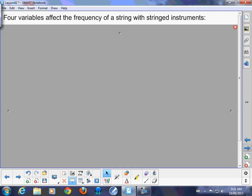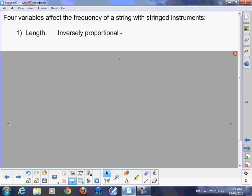I want to talk about the four variables that affect frequency of a string with a stringed instrument. The first one's the length. The length of the strings affects pitch and it's inversely proportional. So what that simply means is that if you have an initial frequency f1 and you want to move it to a different frequency f2, the lengths would be inversely proportional.